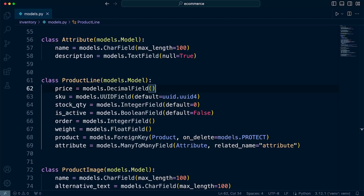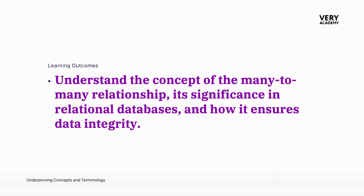So hopefully that's given you a good starting point to understand the basics of building a many-to-many relationship between tables. To recap: to define a many-to-many relationship in a Django model, you simply need to define it as models.ManyToManyField, like we did with the foreign keys. You need to remember that this field is not created in the database — Django will automatically build a new table with a primary key and two foreign keys associated and linked to the two tables that you're building a relationship with.